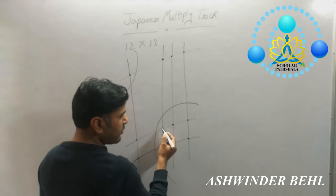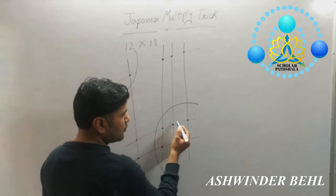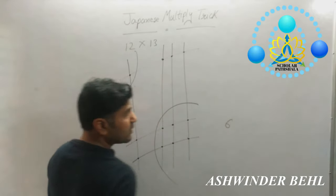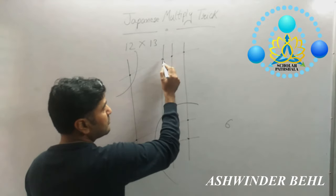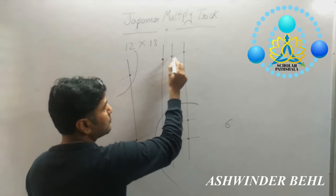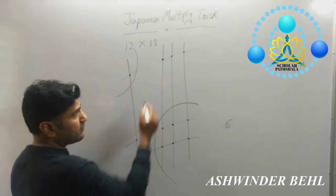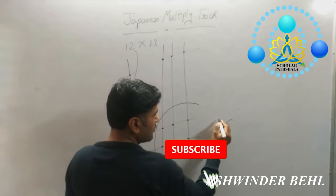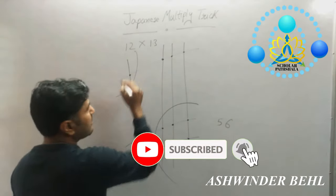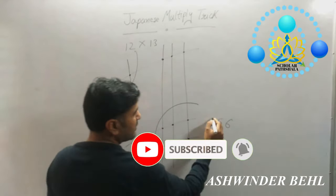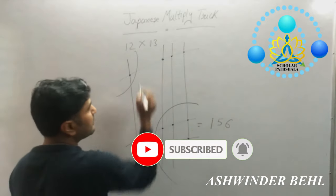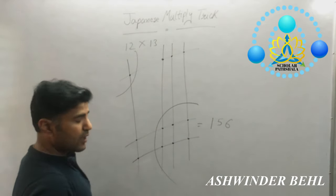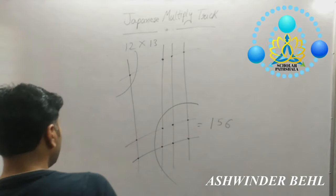Now you count the points: 1, 2, 3, 4, 5, 6. So you can put here 6. And count the next points: 1, 2, 3, 4, 5. Those points we will add — 3 plus 2, that is 5. And the carry count is 1. So the answer is 12 into 13, that is 156. Now we will take one more example.